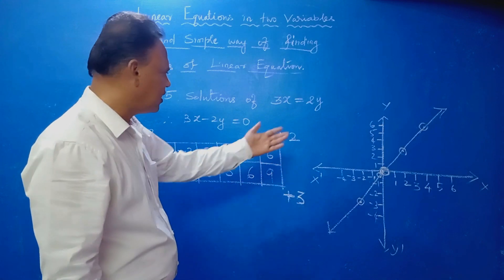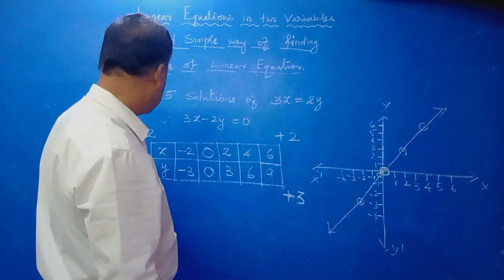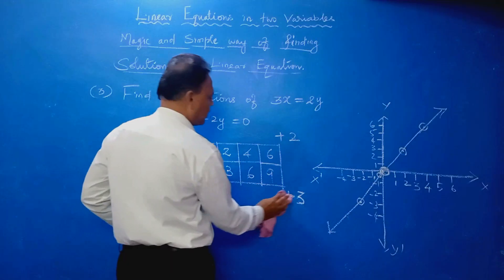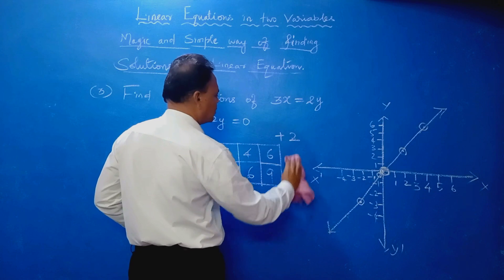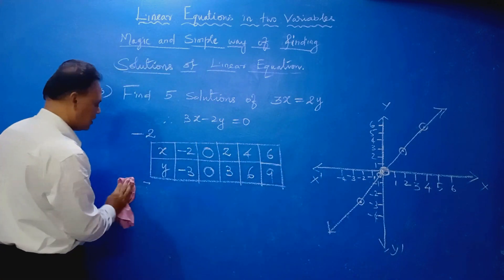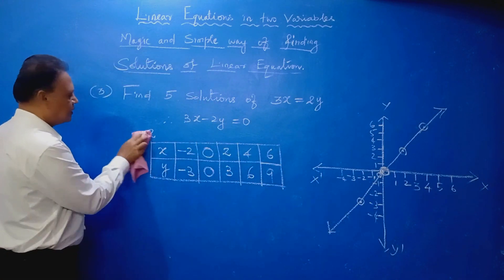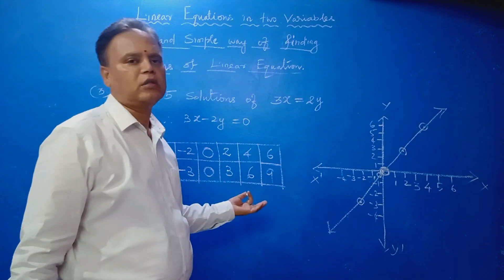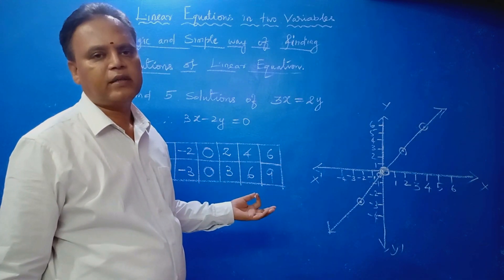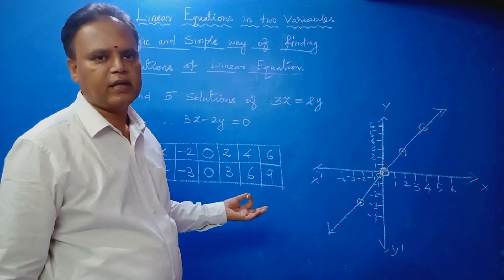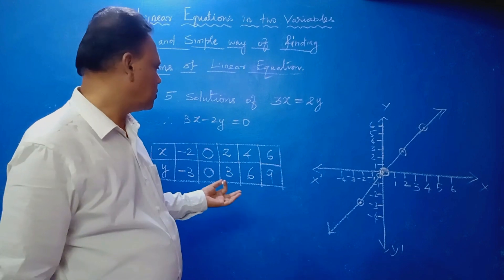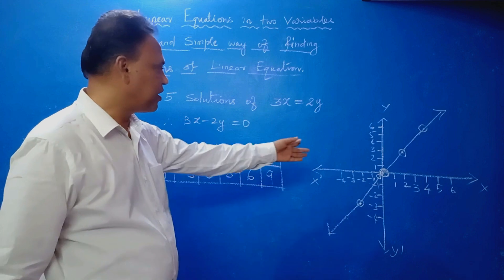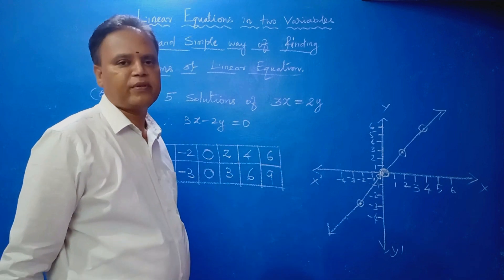So you can do so many problems like this. After solving, just take the eraser. Nobody knows how you got the solutions — that is the trick. Easily we can find out the solutions and we can draw the graph.